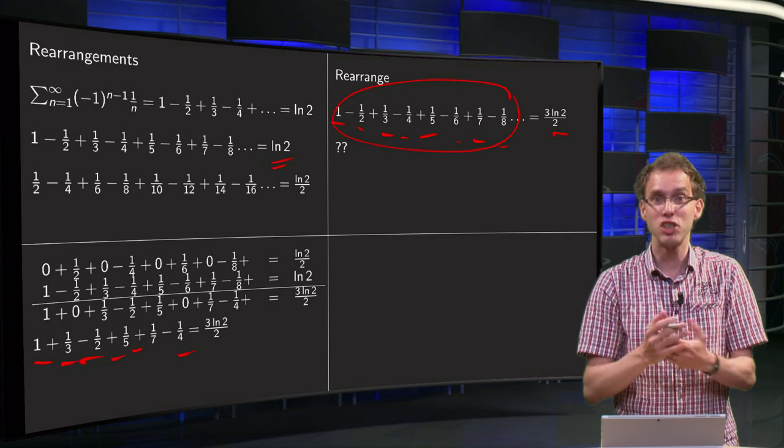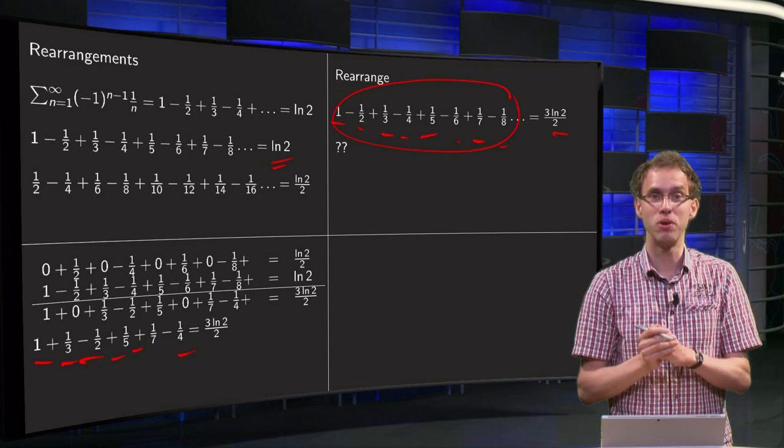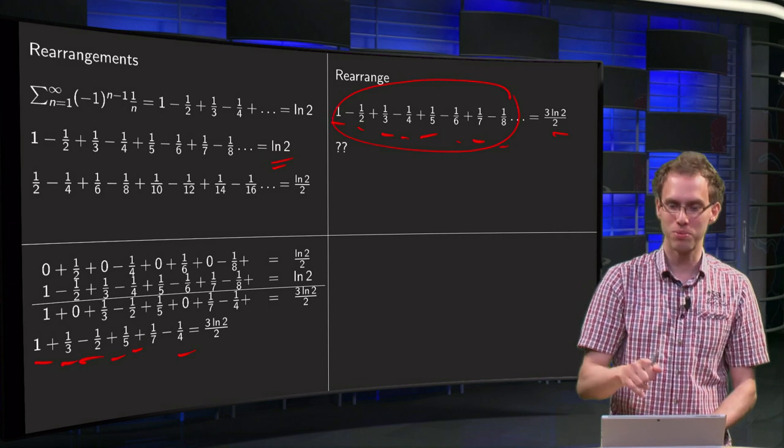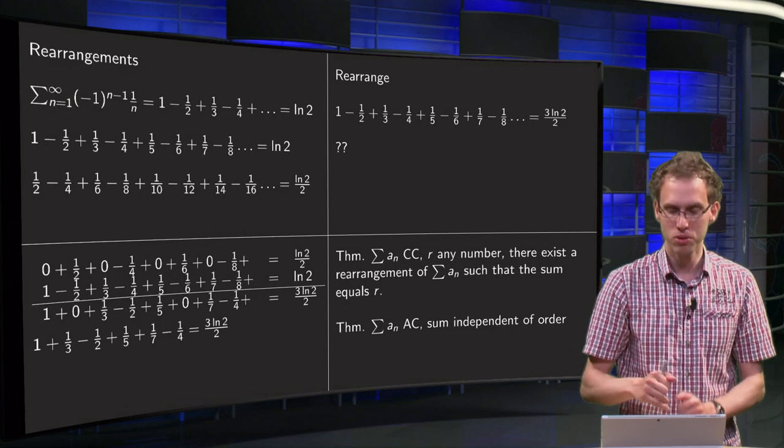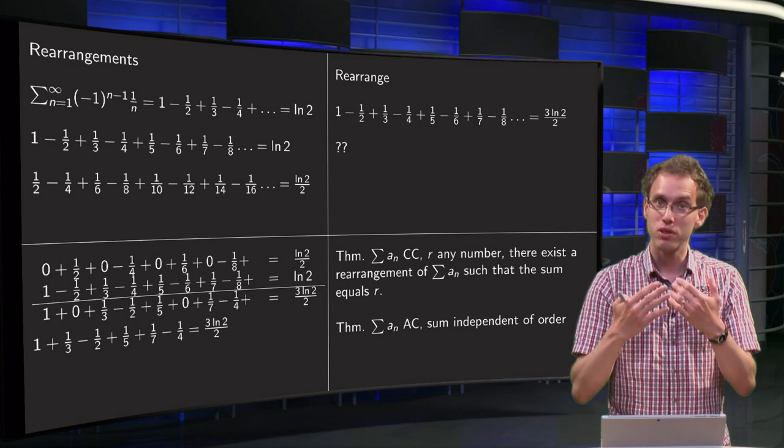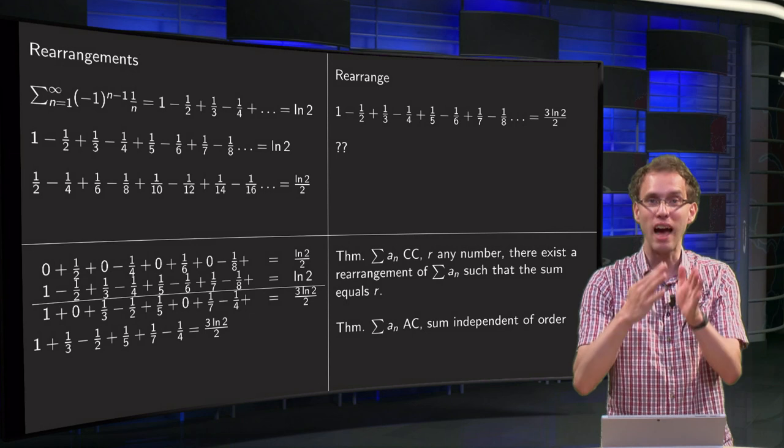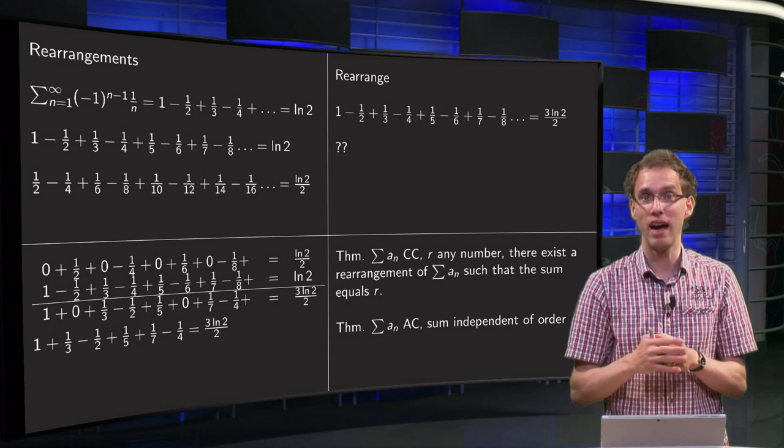Somehow we found an additional factor (1/2)ln 2. Where is the mistake in this whole reasoning? It is quite subtle. It is due to the fact that if you have a conditionally convergent series, you cannot rearrange the terms. You really have to add them in the order in which you have them.